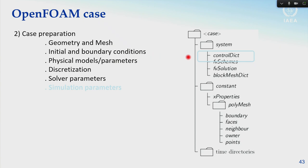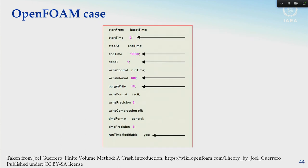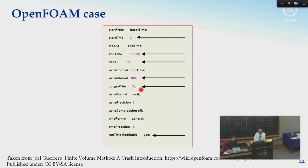The 'controlDict' file provides simulation parameters: the start time, the end time, the write interval (how often the solution is written to disk), and the time step delta_t. Note that the write interval differs from delta_t — delta_t is the time step for computation, while the write interval controls how frequently results are saved.